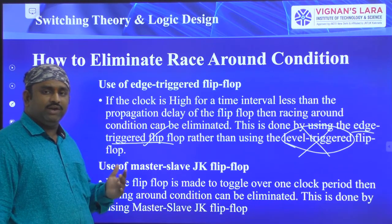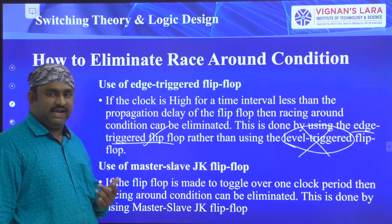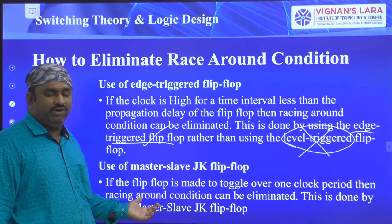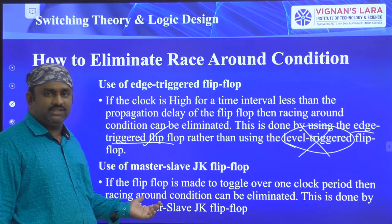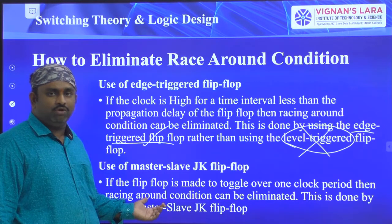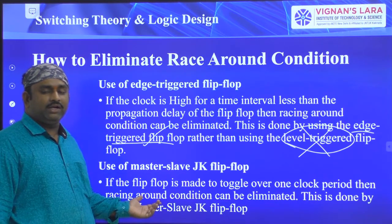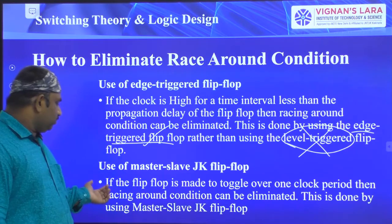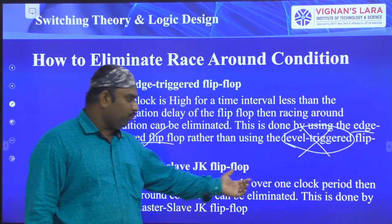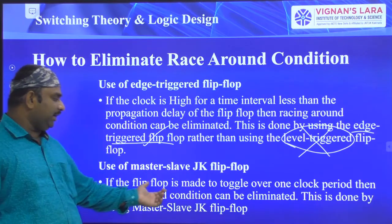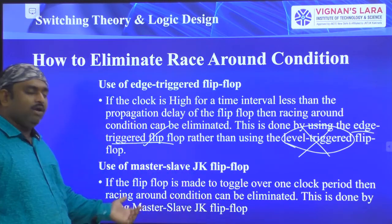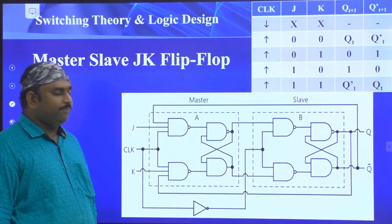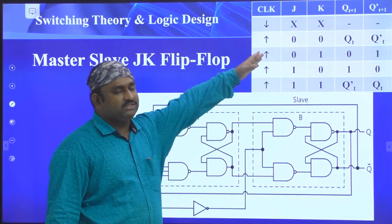The second solution is the use of master-slave JK flip-flops. In older days, when flip-flops and clock signals were designed, edge-triggered clock signals were not available — only level-triggered signals were available. With level-triggered signals, to eliminate race around condition, the master-slave JK flip-flop solution was developed. If the flip-flop is made to toggle over one clock period, then race around condition can be eliminated — this is done using the master-slave JK flip-flop configuration.